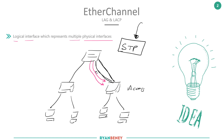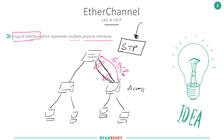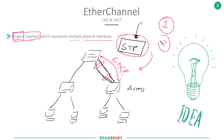In order to stop that from happening, an EtherChannel represents multiple physical interfaces with a logical interface. EtherChannel allows us to bundle both ports together and allows the switches to communicate via LACP — the Link Aggregation Control Protocol. They both agree that even though there are two physical interfaces between each other, they will treat it as a single logical interface. So from Spanning Tree's perspective, it sees a single port, but physically there are two ports underneath.